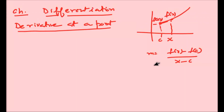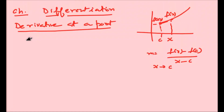And if we say x tends towards c, this point tends towards c, meaning this difference is very small. At this point, if this exists finitely — if this limit exists finitely — then it is called the derivative or differentiation at point f(x) when x equals c.